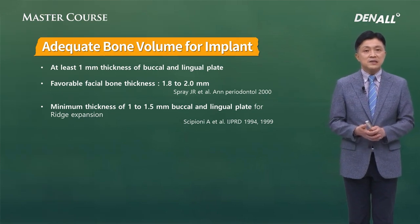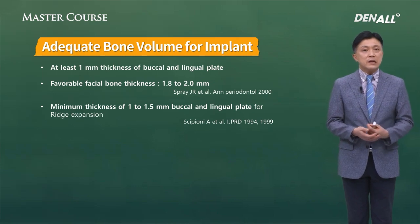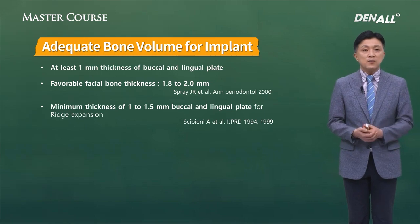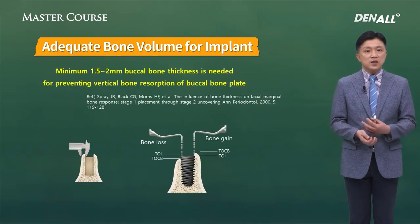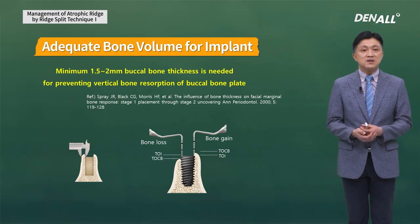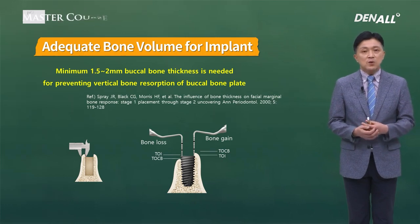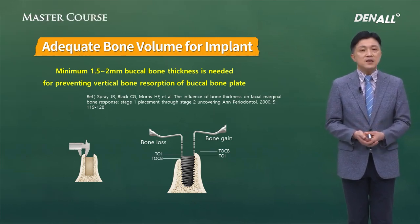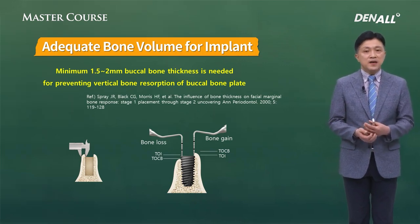How much is sufficient bone for implant placement? In the case of the upper posterior, there needs to be at least 1 mm thickness of buccal and lingual plate. Sprays (2000) said the appropriate bone amount is 1.8 to 2 mm. For ridge expansion, you need at least 1 to 1.5 mm of buccal or lingual plate. Therefore there needs to be at least 1.5 to 2 mm of buccal or lingual bone to prevent buccal bone resorption.